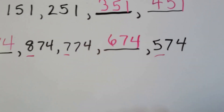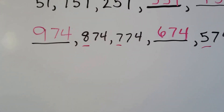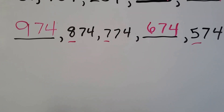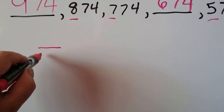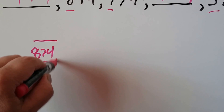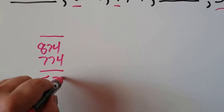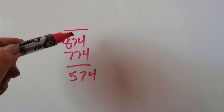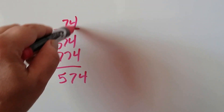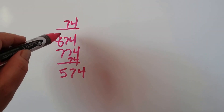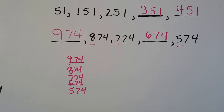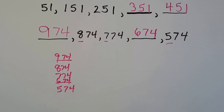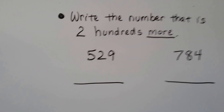Going back the other way: 974, 874, 774, 674. You can also use models of hundreds, tens, and ones for extra help, or make a list by stacking the numbers to compare them: blank, 874, 774, blank, 574. The 74s stay the same, so the missing numbers will also have 74. Looking at the hundreds place: nine, eight, seven, six, five. Stacking them can help, but it's really important to learn to do this as mental math in your head.